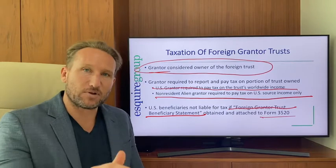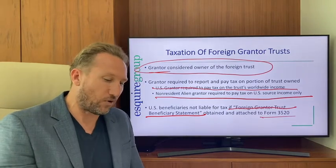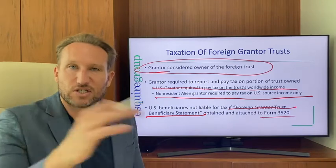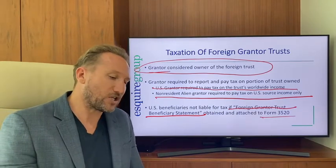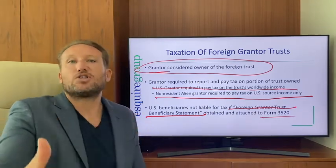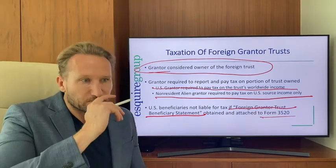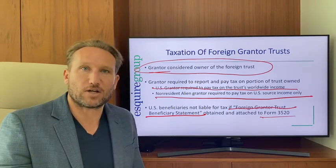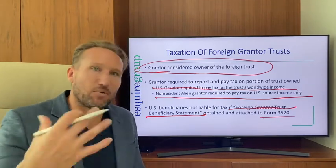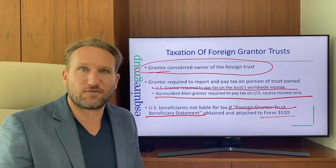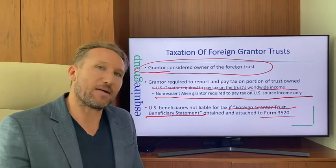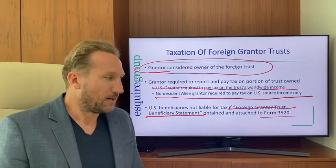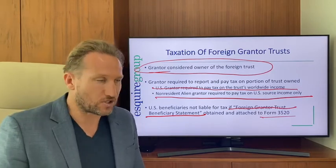The foreign grantor trust beneficiary statement is generally sent by the trustee to the beneficiary. So if I form the foreign trust and report all of its income because I'm the grantor and considered the trust owner, and that trust makes a distribution to my kid who's a U.S. person...